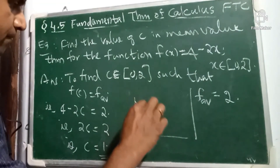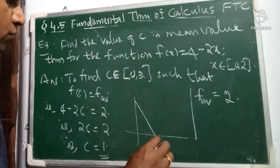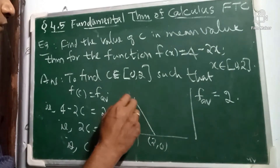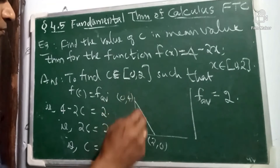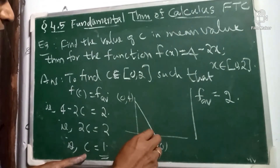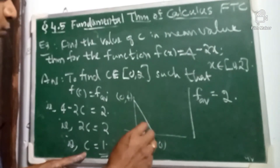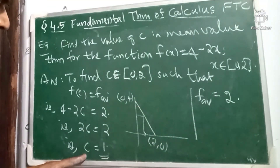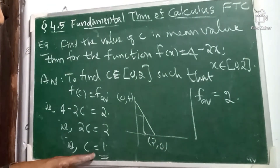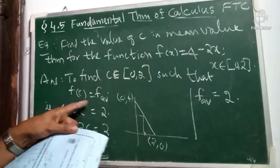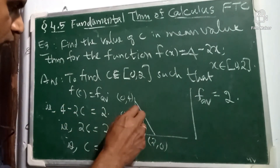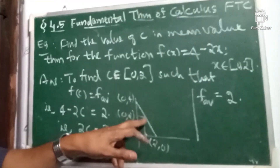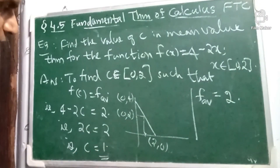This is the graph. The point 0 is here, the point (2, 0) is here, and the point (0, 4) is here. When c equals 1, the average value is attained. The average value f(c) equals 2, which corresponds to the point (1, 2) on the graph. So the average is 2, and it is attained at the point c equals 1.